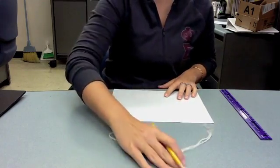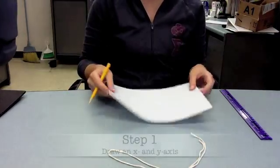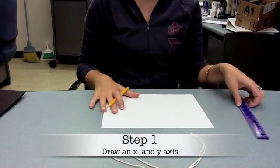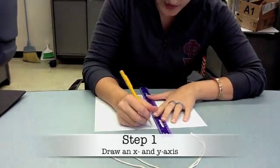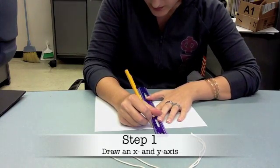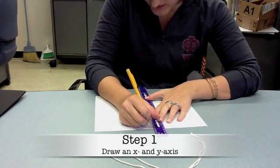The first thing you're going to do is draw an x-axis and a y-axis on our graph paper with our ruler. You want to try and make your x-axis and your y-axis as centered on the paper as you can, but it doesn't have to be perfect.